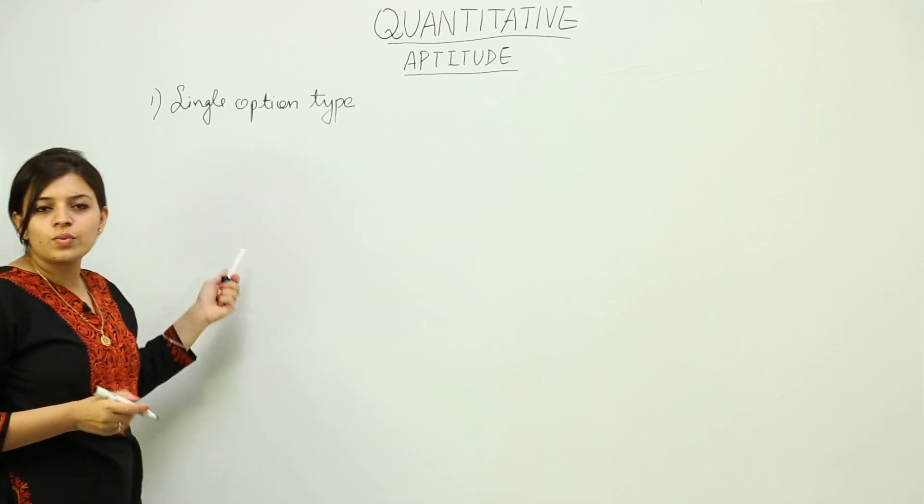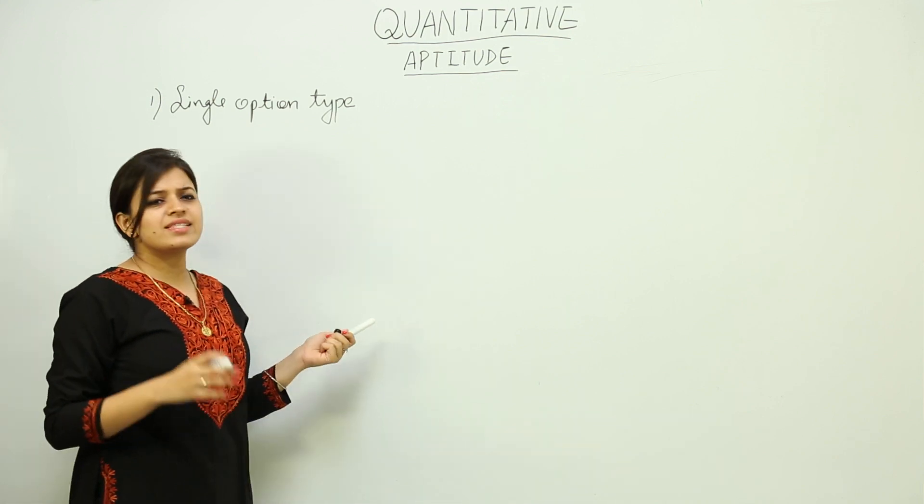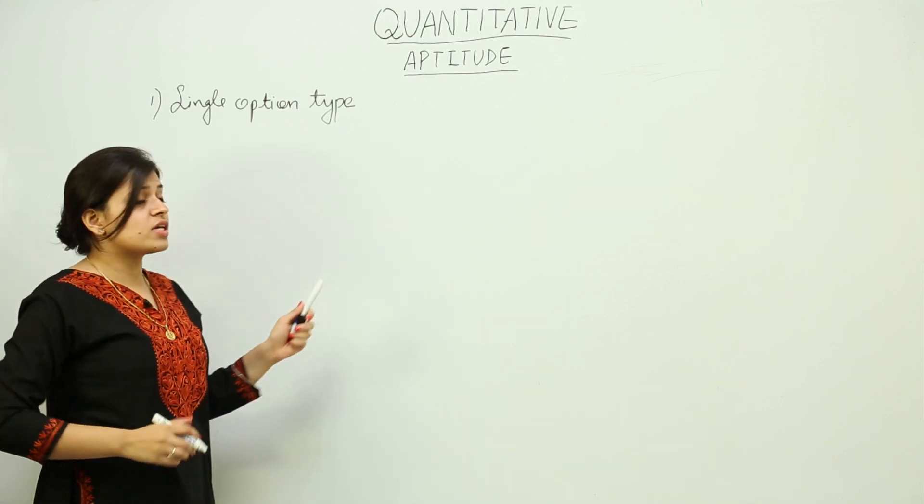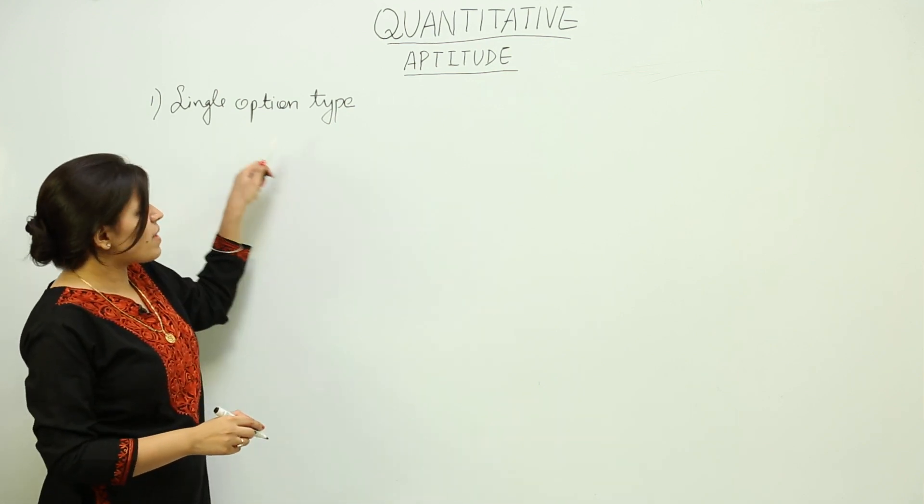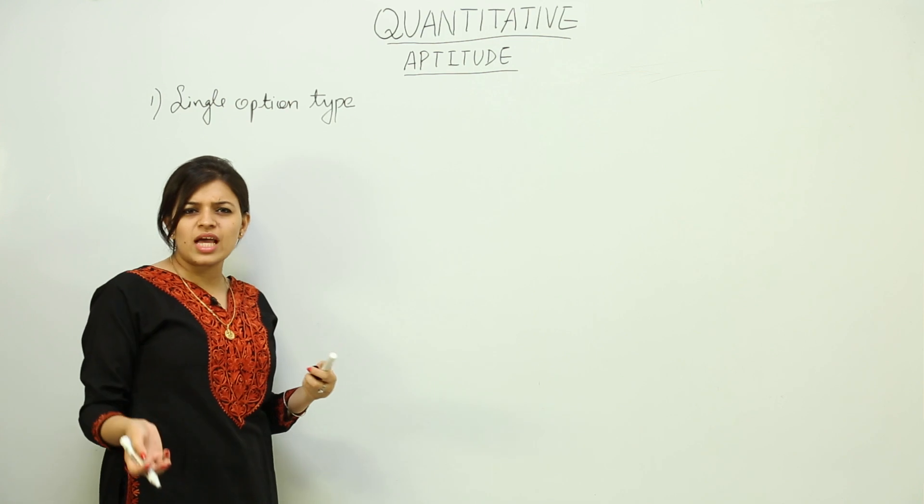In this type of question, you will have a question followed by 4, 5, or 6 options, and only one out of those will be correct. That is the most basic and familiar type of question.